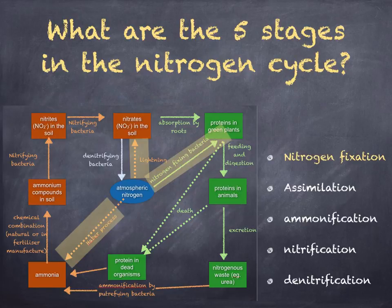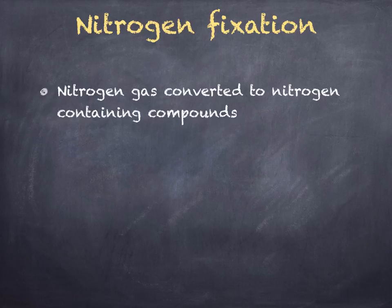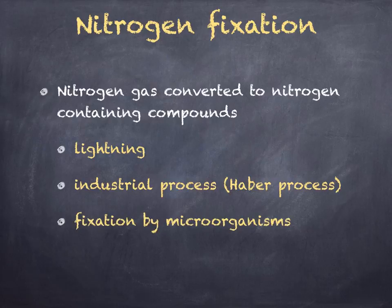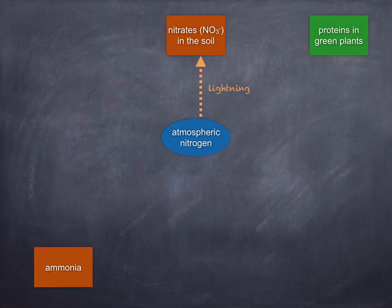Nitrogen fixation is when nitrogen gas is converted to nitrogen-containing compounds. There are three ways of doing this, all of which require energy: lightning, industrial process (for example, the Haber process), and fixation by microorganisms. Lightning allows nitrogen and oxygen to combine forming oxides of nitrogen, and these are washed into the soil by rain and absorbed by plant roots in the form of nitrates.